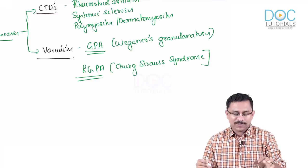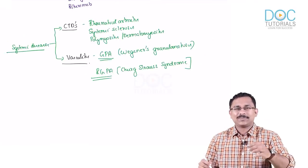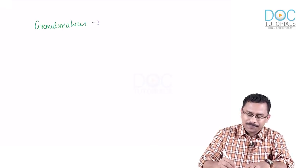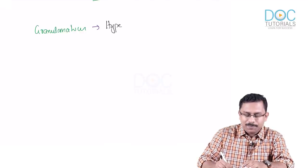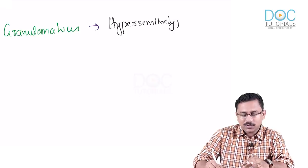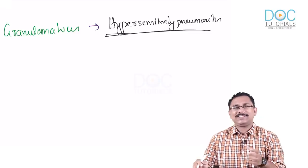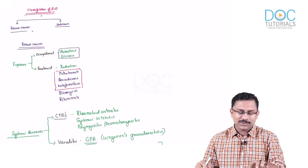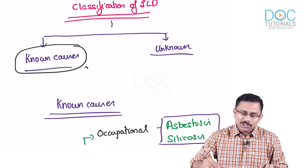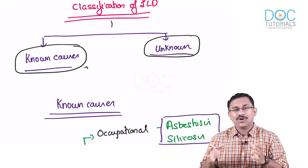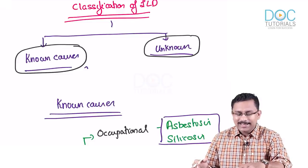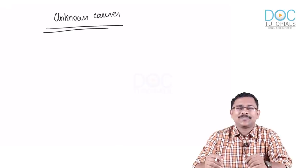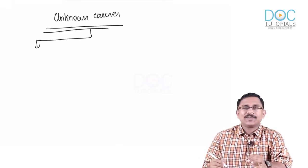Those are the known causes — either exposure or systemic diseases. Certain granulomatous diseases like hypersensitivity pneumonitis, which is your extrinsic allergic alveolitis, can also result in an ILD pattern. You also have ILDs due to unknown causes, where you are not sure of the trigger. In this unknown-cause category there are many subtypes to understand.